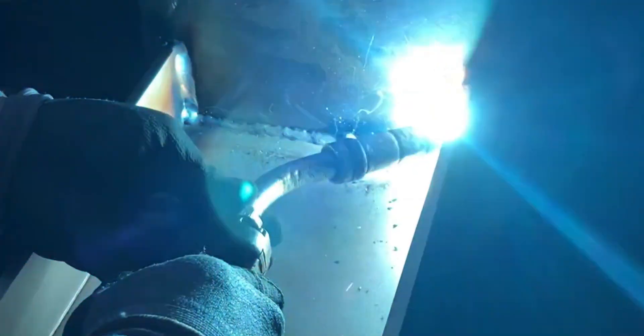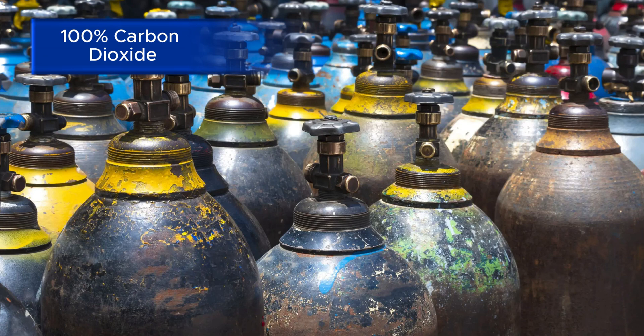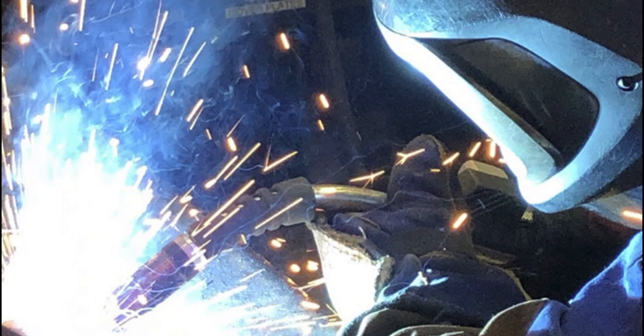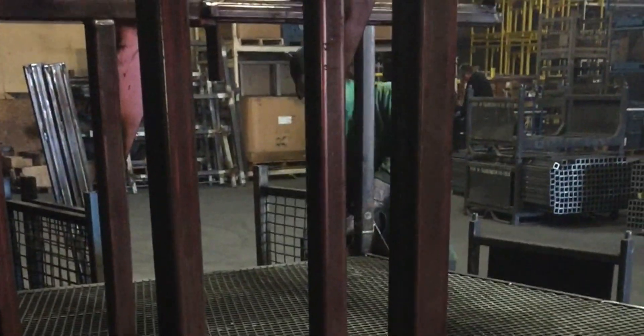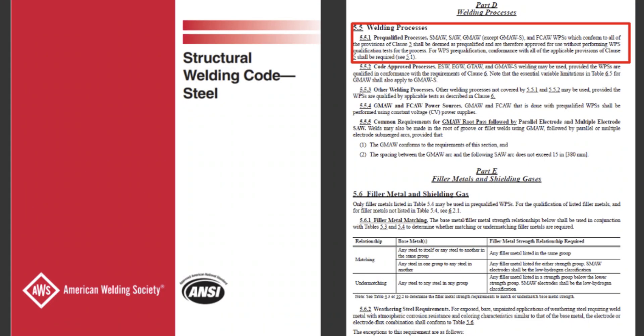A major advantage is its all-position welding capability. The low heat input allows the puddle to solidify quickly, making it great for out-of-position work. It's also excellent for dealing with gaps and poor fit-up, which is why it's widely used for root passes on pipe. The shielding gas used is typically 100% carbon dioxide or a mix containing 75% argon and 25% carbon dioxide. However, the blasting action generates spatter, and the American Welding Society prohibits its use in pre-qualified welding procedures for structural members due to a high probability of lack of fusion.